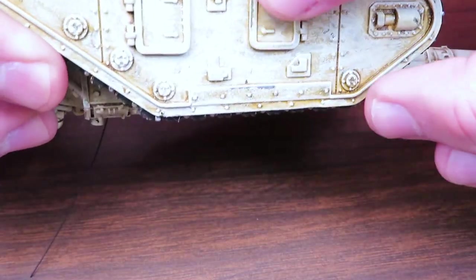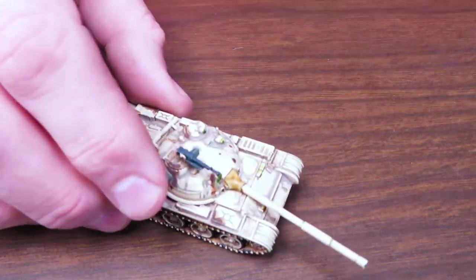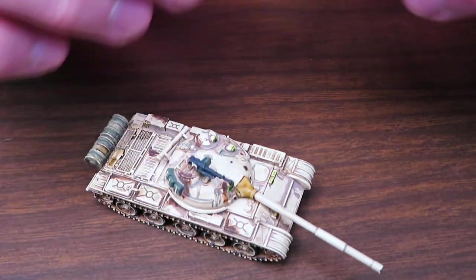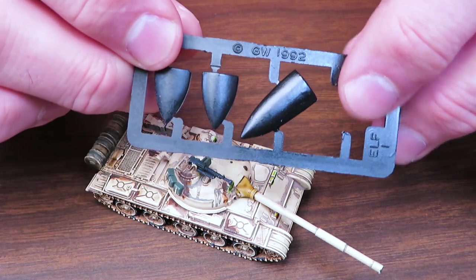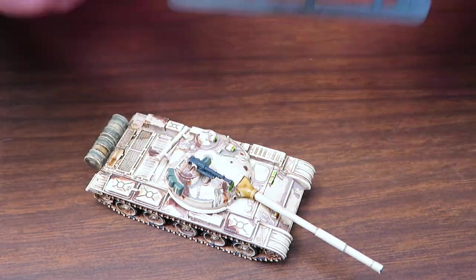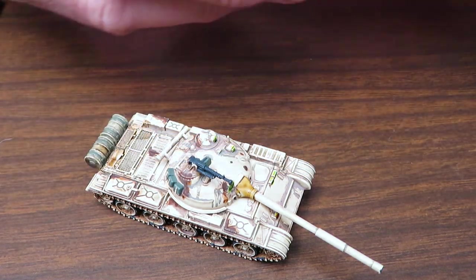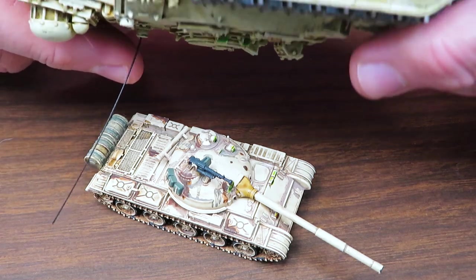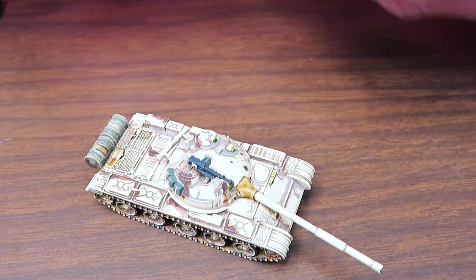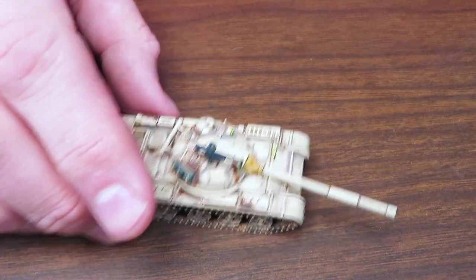First thing that we do is on the surface that we're going to put the decal on is do some gloss varnish. Now I've already glossed this shield and I've already glossed the side of this tank here because I was prepared, but I haven't done the turret on my tank.